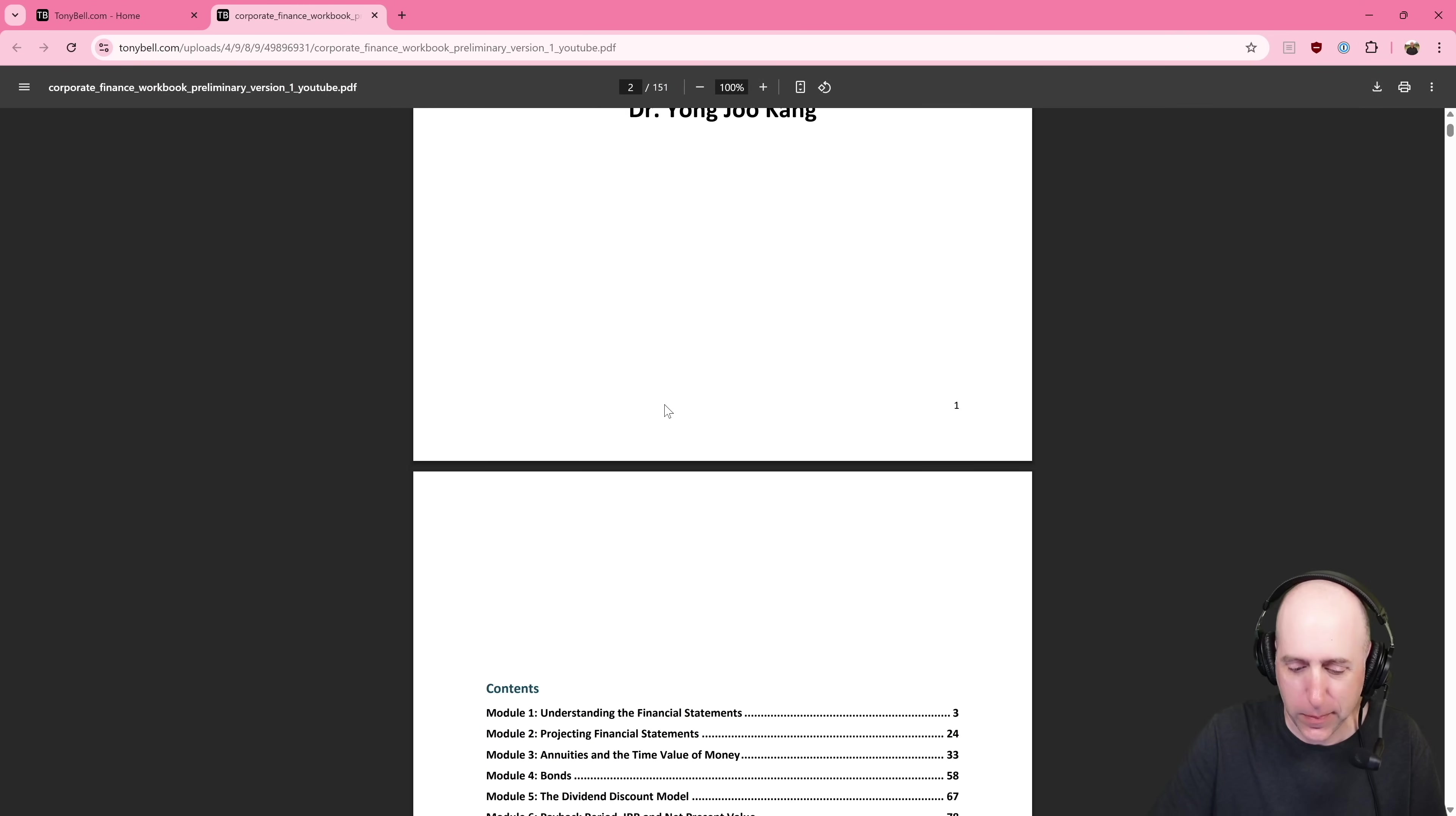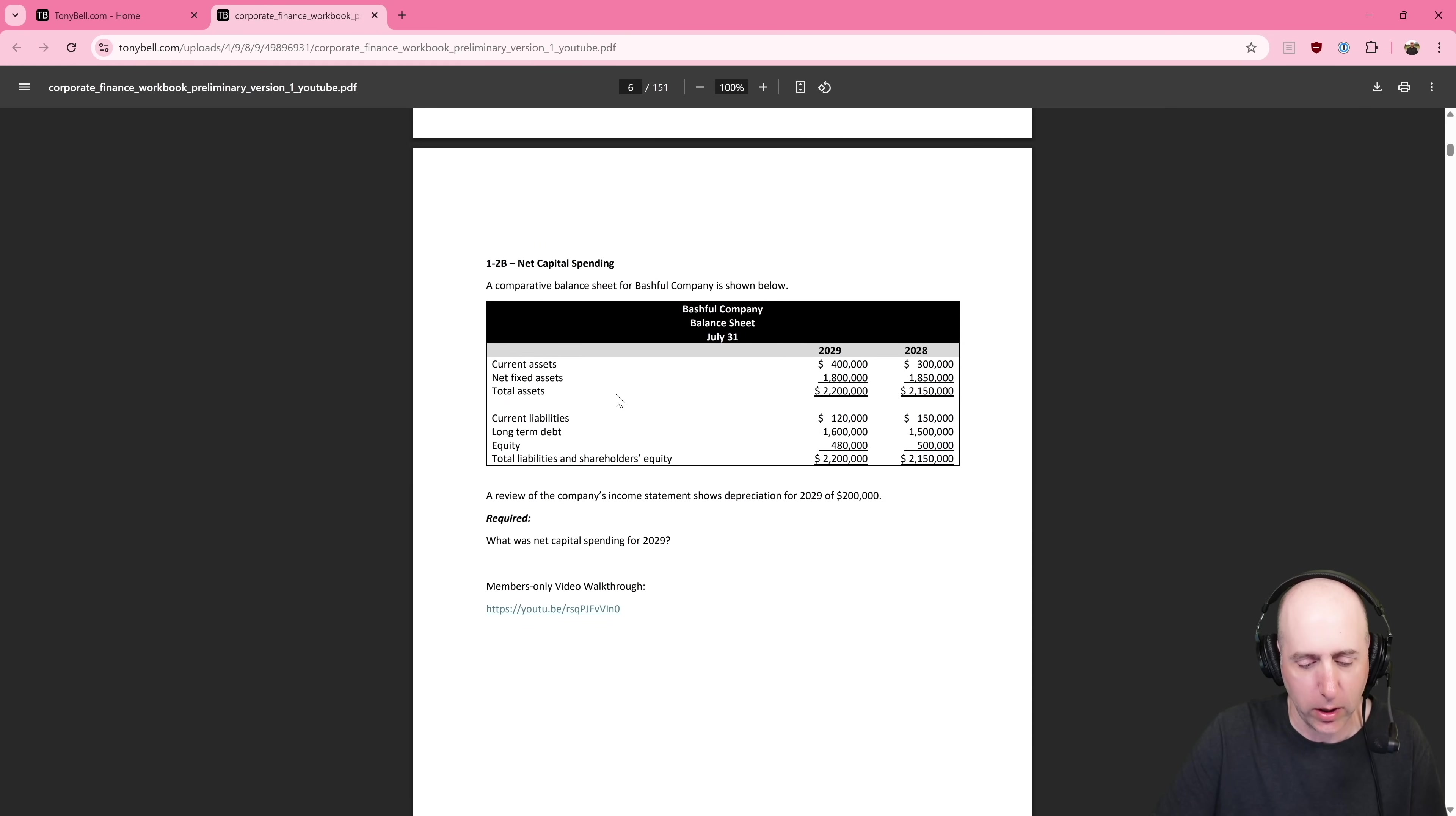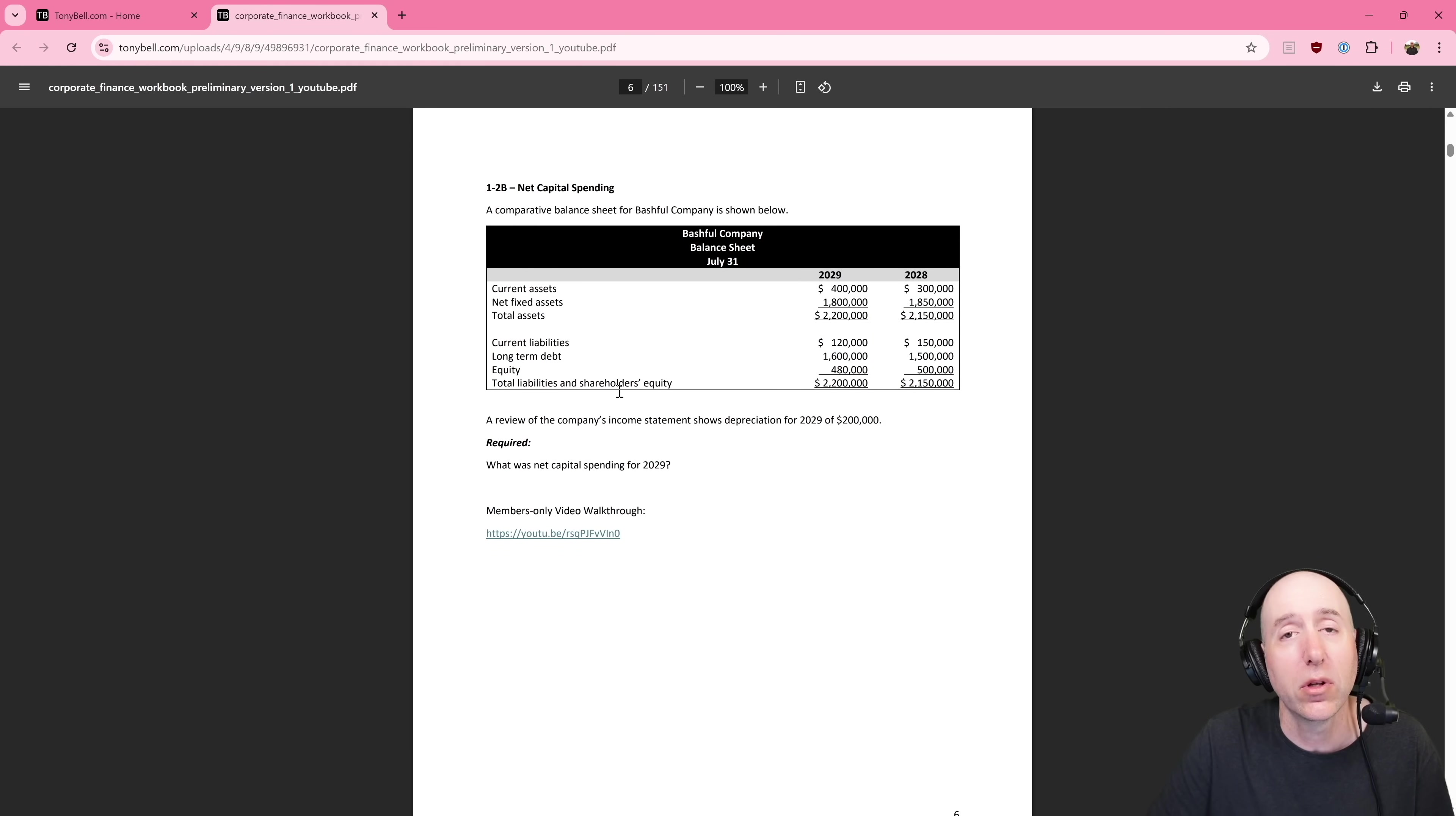The PDF just pops right up. You'll scroll down and find whatever problem it is that we're working on. As you scroll through the problems, you'll notice many are free and open like the one you're watching now, but some are members only.